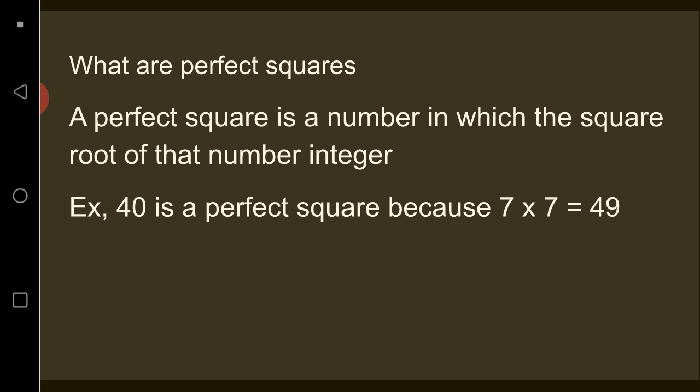Now what is a perfect square? A perfect square is a number in which the square root of that number is an integer. An example is—that's supposed to say 49, I don't know why it says 40—but 49 is a perfect square because 7 times 7 equals 49.